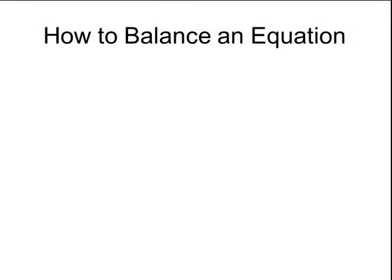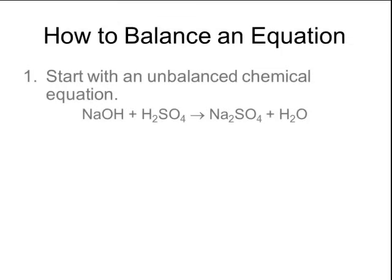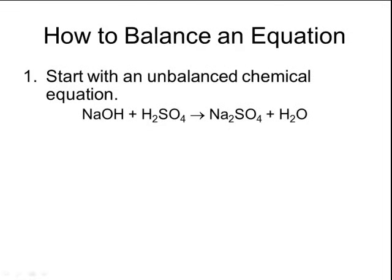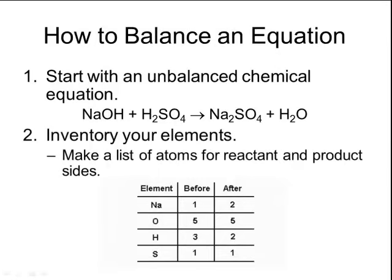Balancing equations is relatively easy as long as you follow a few simple steps. The first thing is to start with an unbalanced chemical equation. In this particular reaction, sodium hydroxide reacts with sulfuric acid to make sodium sulfate and water. It's very important that when translating from a word equation to a formula equation, you get the chemical formulas correct, because incorrect formulas will cause your equation to not be balanced properly. Once you've written down your chemical equation, you need to make an inventory of your elements.